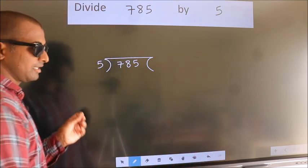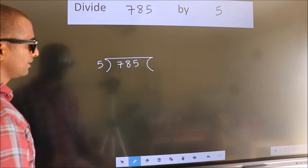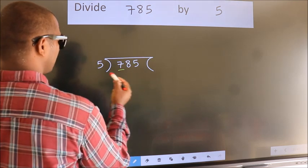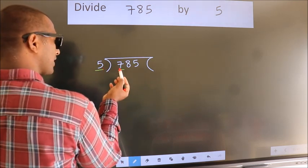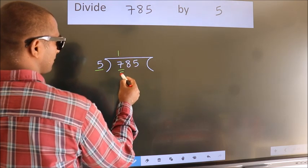This is your step 1. Next, here we have 7, here 5. A number close to 7 in 5 table is 5 once 5.